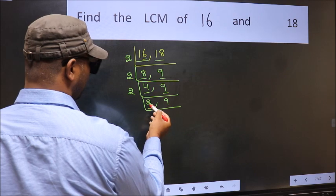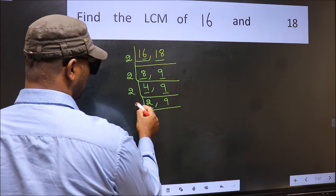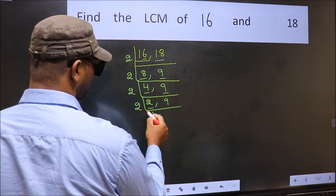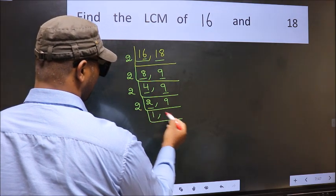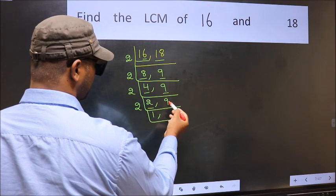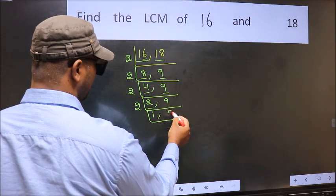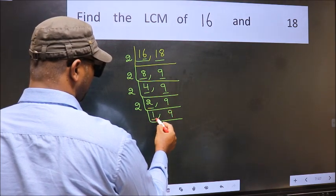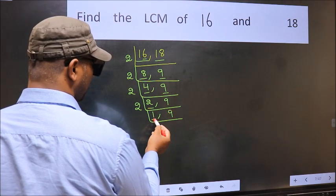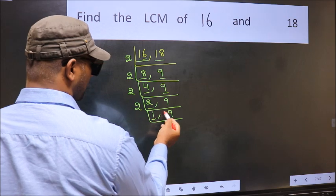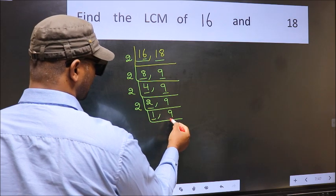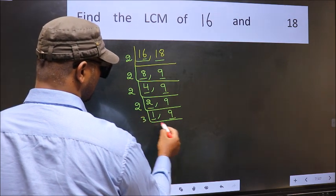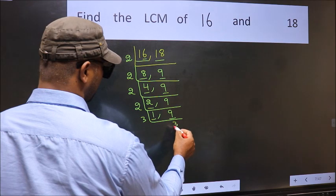Now here we have 2. 2 is a prime number, so 2 ones are 2. The other number 9 is not divisible by 2, so we write it down as it is. We got 1 here, so focus on the other number 9. 9 is 3 threes — 3 times 3 is 9.